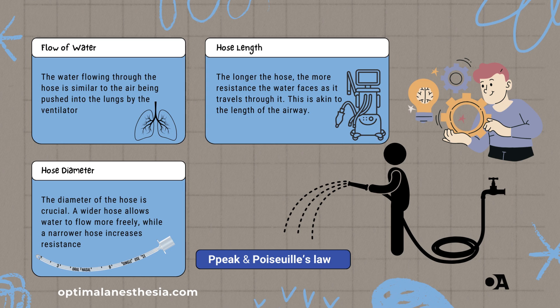Let's break this down with an everyday analogy. Imagine the ventilator system as a garden hose. The ventilator is like the faucet, the tubing and endotracheal tube are like the hose, and your patient's airway is the nozzle at the end. Now think about watering your garden. First, flow of water: the water flowing through the hose is similar to the air being pushed into the lungs by the ventilator. Second, hose length: the longer the hose, the more resistance the water faces as it travels through it. This is akin to the length of the airway.